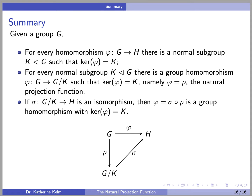To summarize: given a group G, for every homomorphism phi on G, there is a normal subgroup K of G such that the kernel of phi equals K. For every normal subgroup K of G, there is a group homomorphism phi from G to G mod K whose kernel is K, namely the natural projection function. Further, if sigma is an isomorphism from G mod K to H, then sigma of rho is a group homomorphism whose kernel is K. I hope you found this video helpful. Thank you so much for watching.